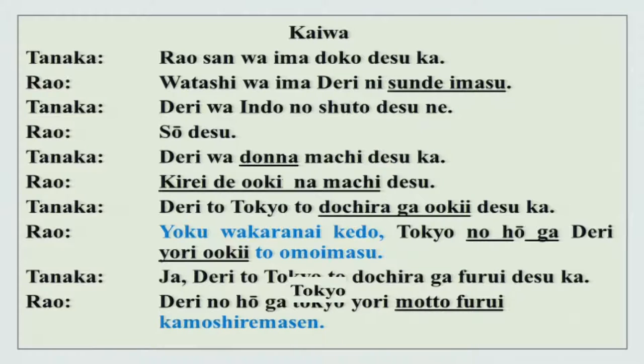Now there is a small radio dialogue for you. Just listen to the dialogue and then I will do the explanations. The dialogue is between Tanaka-san and Rao-san. Rao-san wa ima doko desu ka? Watashi wa ima Deri ni sunde imasu. Deri wa Indo no shuto desu ne? Aa sou desu. Deri wa donna machi desu ka? Kirei de ookii na machi desu. Deri to Tokyo to, dochira ga ookii desu ka? Yoku wa karanai kedo, Tokyo no hou ga Deri yori ookii to omoimasu.